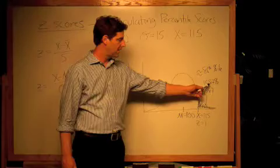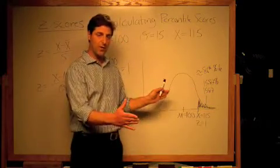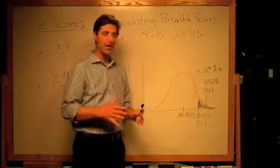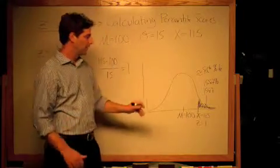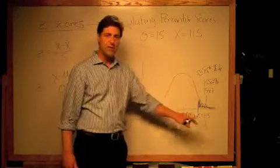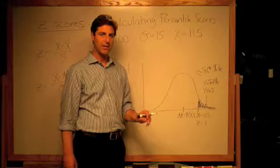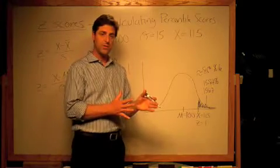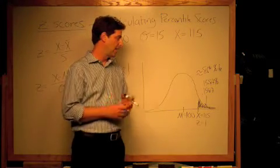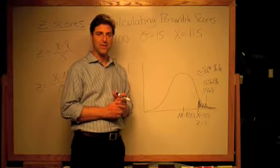...if you subtract this from one, from 1.0, what you're left with is about 86 percent. So a score of 115 on the IQ test corresponds with a percentile score of about 86, so about the 86th percentile...